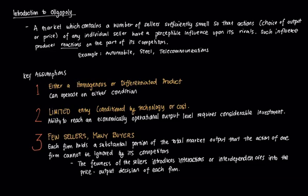Welcome to this discussion on oligopolies, which will kick off our module on the many types of oligopolies that could exist in a market. An oligopoly is regarded as probably the most complex model of a market structure, simply because there are a lot of intricacies involved compared to a monopolistic market structure and perfect competition. It's reasonable to assume it lies somewhere in the middle — not as controlling as a monopolistic market but not as free as a perfectly competitive market. For our purposes, it leans slightly more towards a monopolistic market structure.